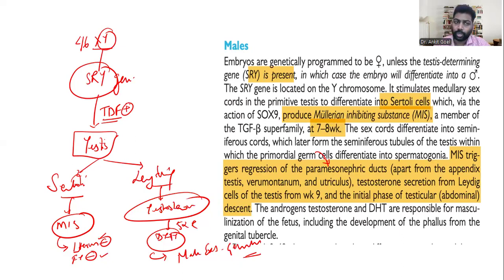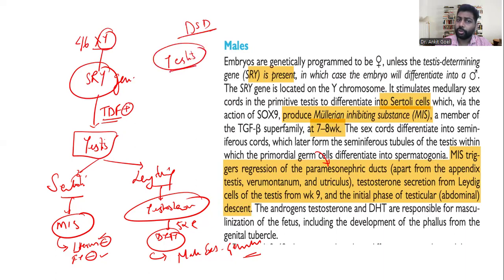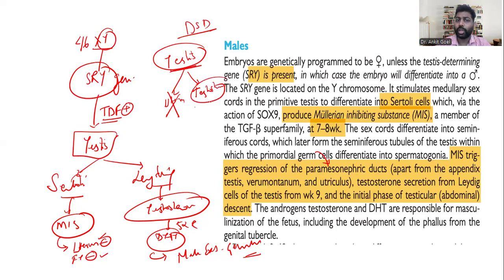A key principle for DSD discussions: as long as a patient has a normal testis, that patient will definitely have absence of uterus, and will also produce testosterone. This is the basic foundation of the whole principle when we approach DSD cases and answer exam questions.